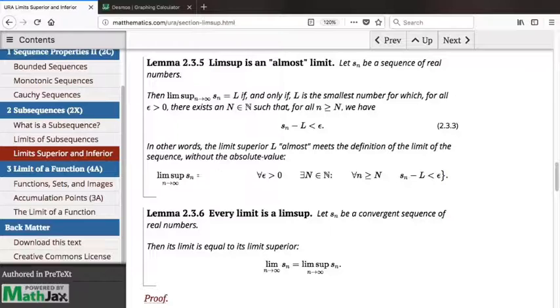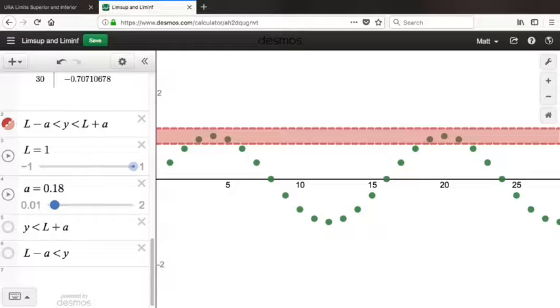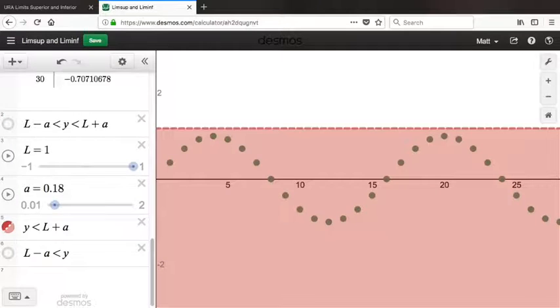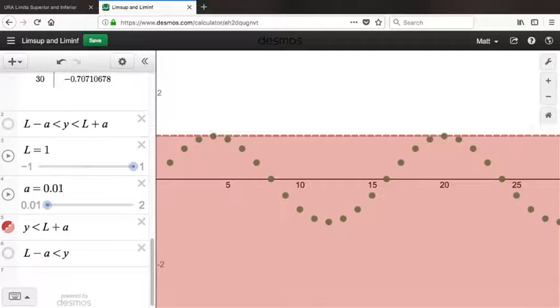That other remaining element is we not only need it to be true that there always exists a tail of the sequence for which Sn minus L is less than epsilon, we also need to choose L to be as small as possible. It's that lowest ceiling idea. And so the fullness of this definition is that it's the smallest L, the infimum among all L that have this property. The way that I think about it is the same as the convergence definition, except that I drop the floor out, and I ensure that the L that I choose is as small as possible.